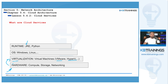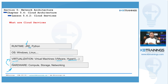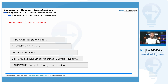On top of the operating system, you need a runtime. Every application needs a runtime — an environment where the application can run. If you have an application written in Java, for example, you need the Java Runtime Environment or JRE. It plays the middleman between the application and the underlying operating system. On top of the runtime, you deploy your application — whether it's an email application or a stock management application.